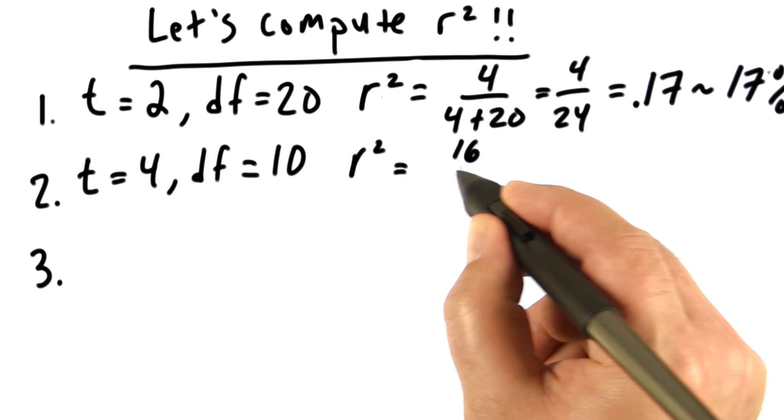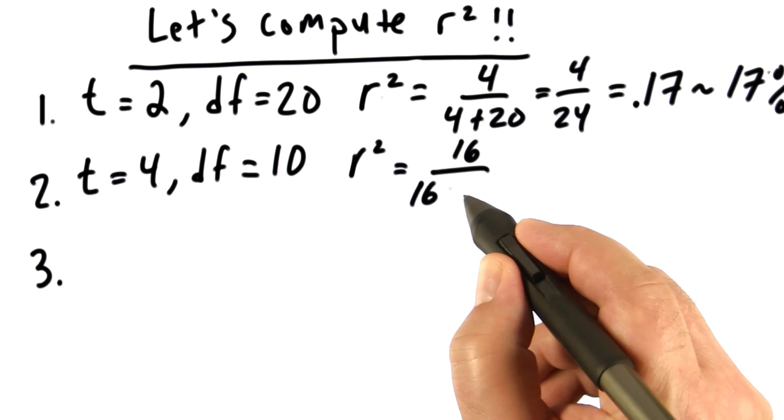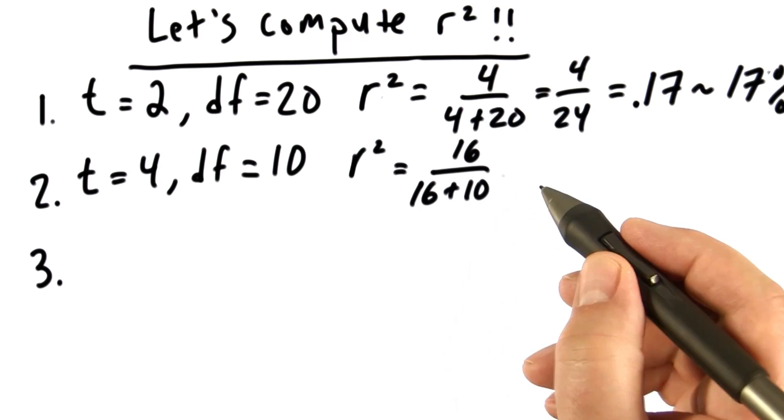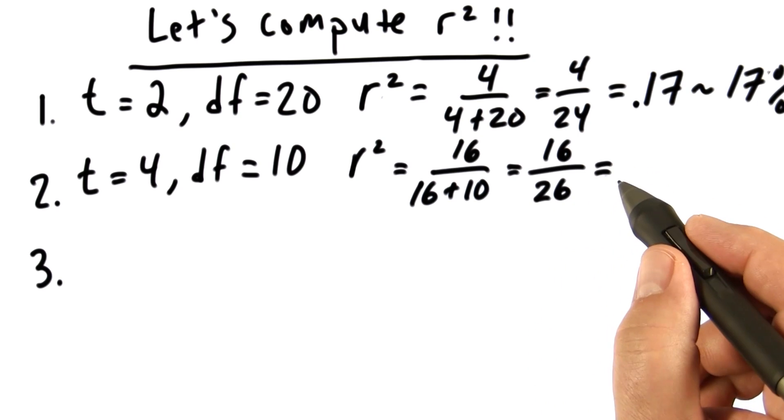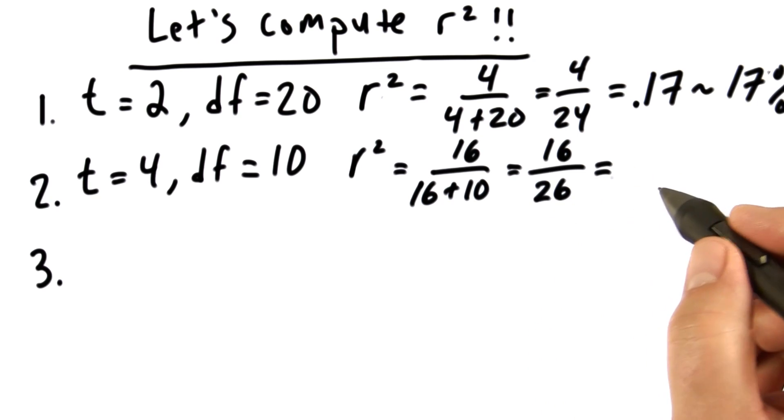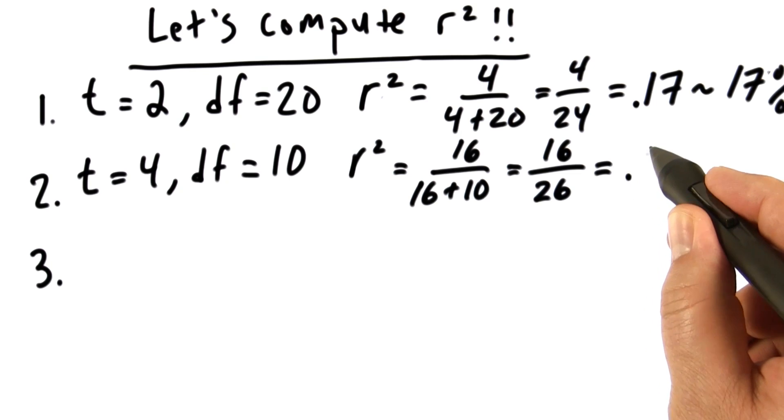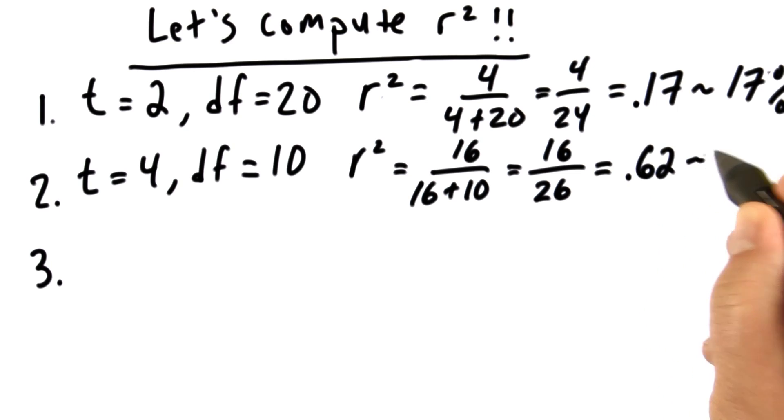4 squared is 16. That goes in the numerator. Put 16 again into the denominator, and we're going to add 10 to that. That gives us 16 over 26. And if we divide 16 by 26 and round to two decimals, that gives us .62 or 62%.